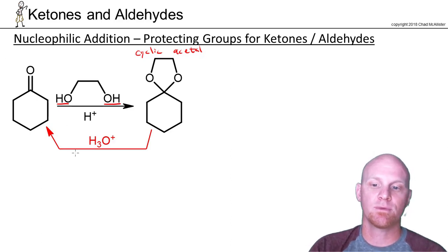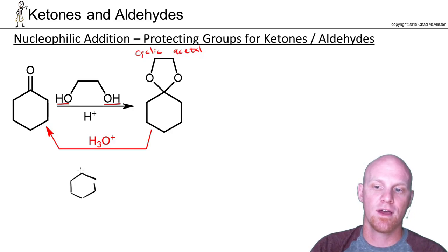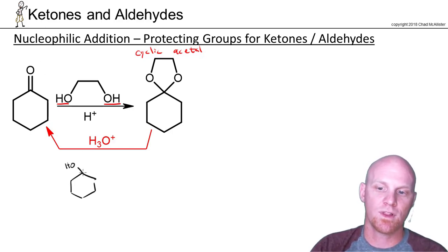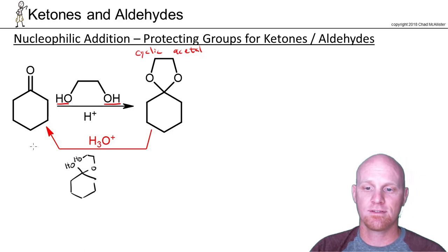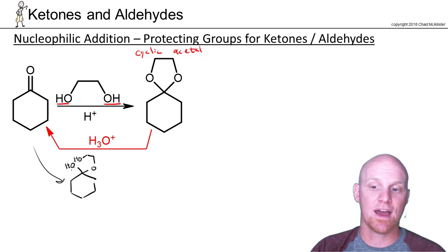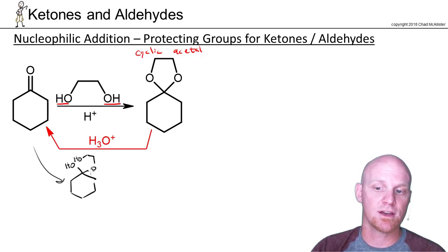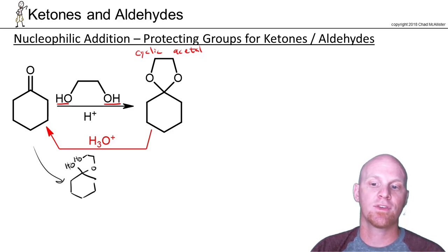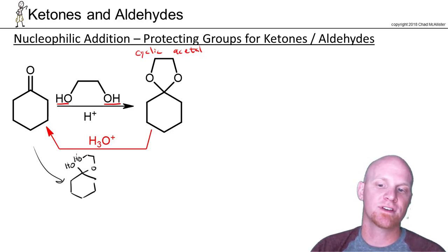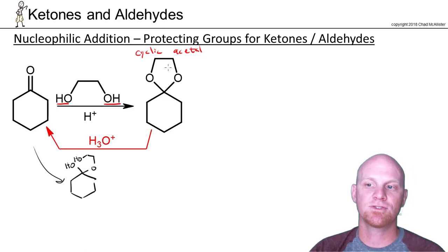I just want to show you the intermediate here so you know where this is going. We're eventually going to end up with an alcohol, and we'll have attached our ethylene glycol on one side. That would be a hemiacetal — a carbon with an OH and a carbon with an O-carbon chain. You'd protonate the OH and have it leave, and then the other side of ethylene glycol would come in and attach to give you this cyclic acetal.